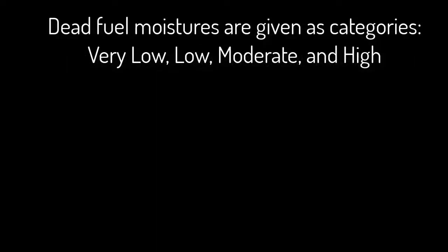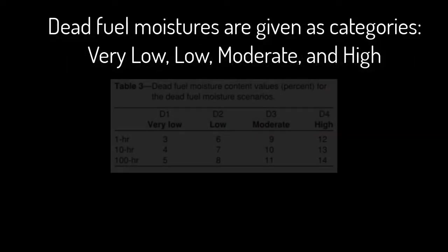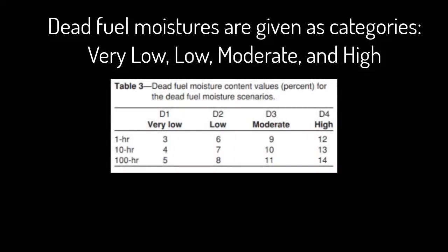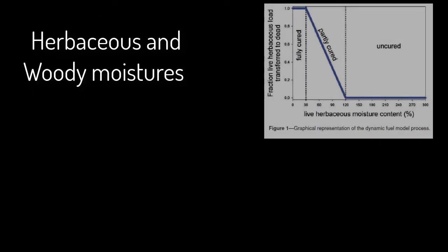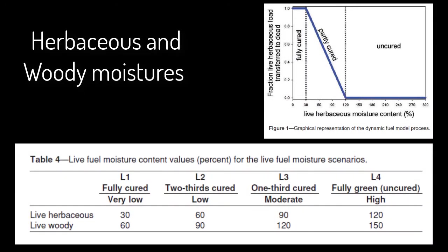Dead fuel moistures are given as categories: very low, low, moderate, and high. Herbaceous and woody fuel moistures are also categorized as very low, low, moderate, and high, and are often estimated based on the season.